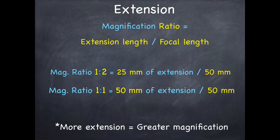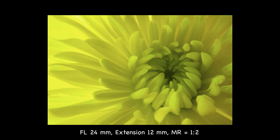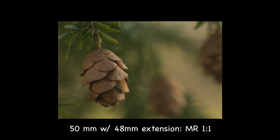You don't want to put too much extension — like 100mm of extension on a 50mm lens — because the focus would actually be inside the lens and you wouldn't be able to focus. Here's an example of flowers shot with a 24mm lens, and then the next shot with 12mm of extension on that 24mm lens — now at one-half life-size, which is pretty nice. And here with 48mm of extension behind a 50mm lens, now at 1:1 in this shot of little pine cones.